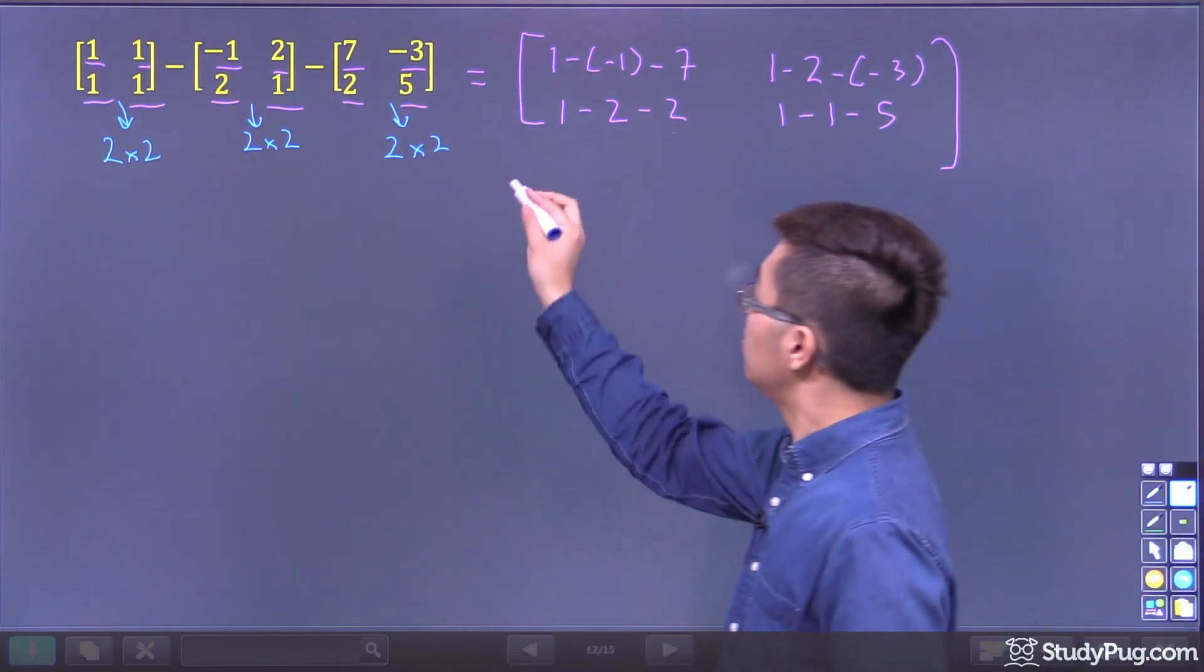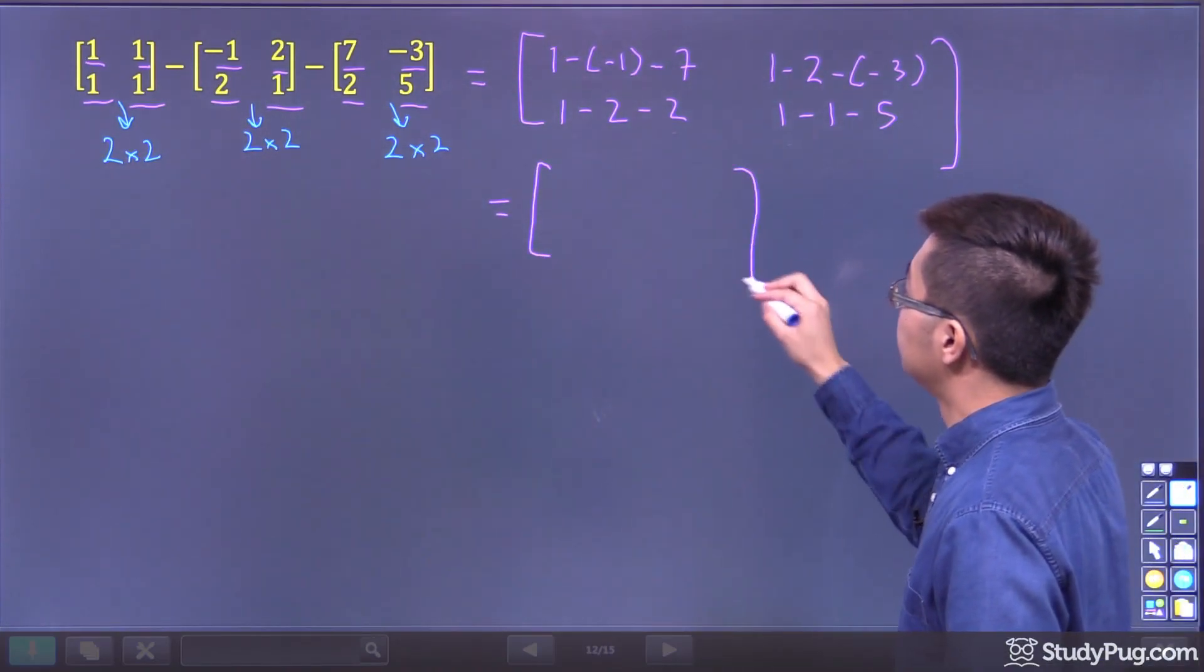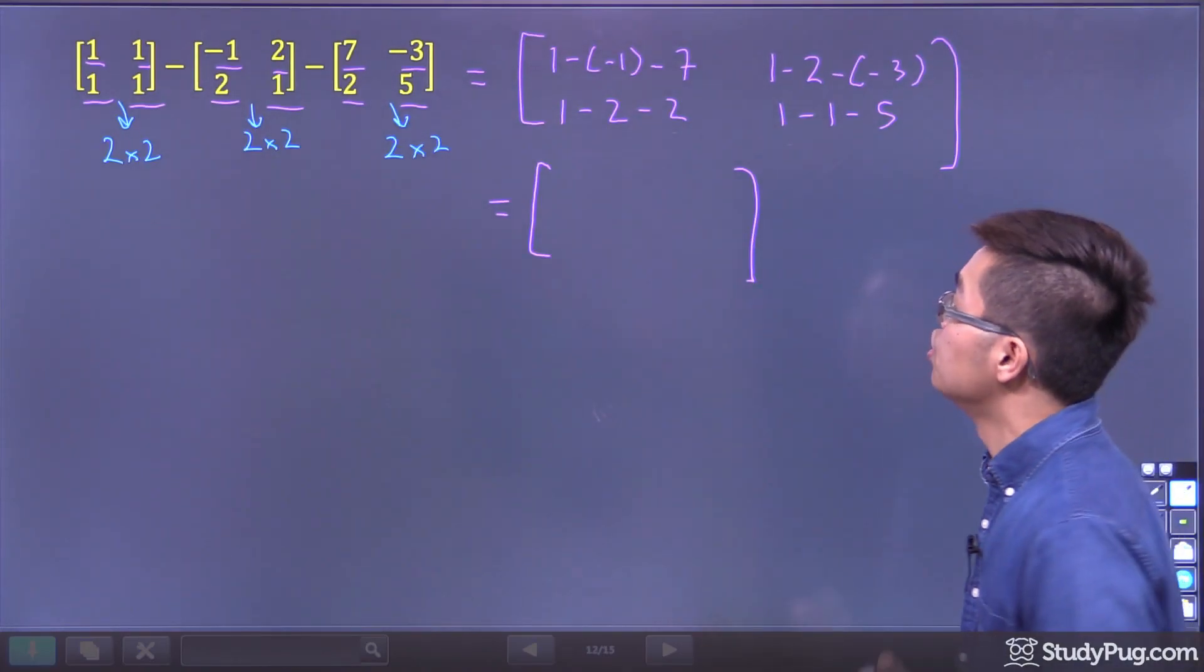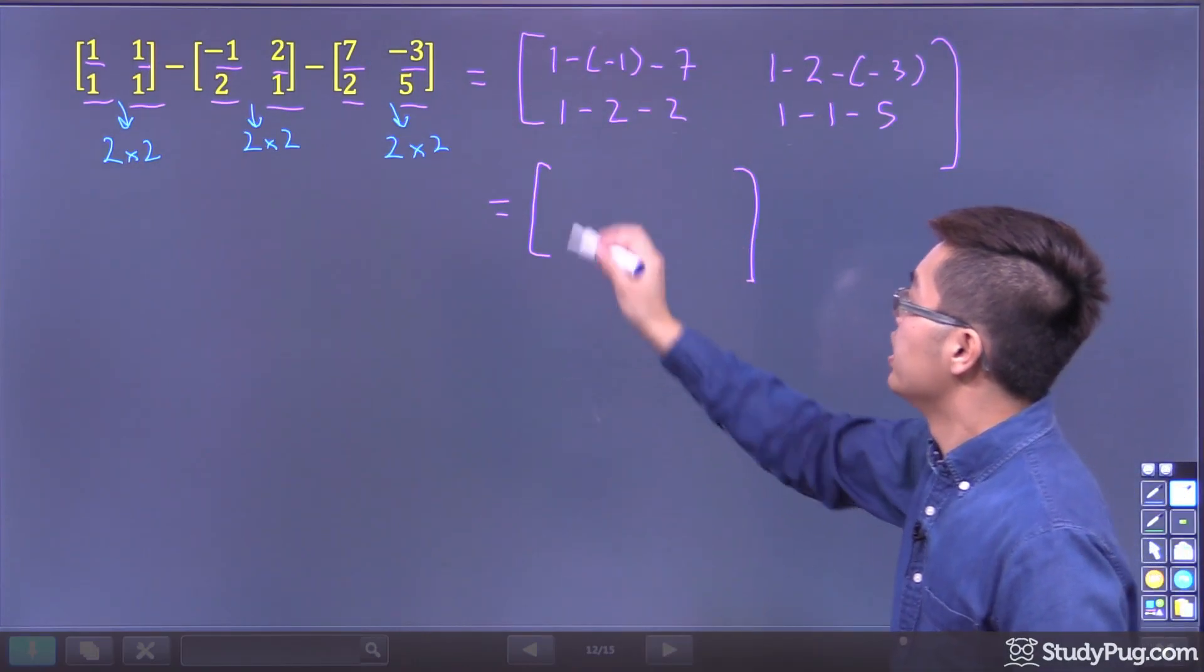Now we go ahead and calculate what this is. So 1 minus negative 1, that's 1 plus 1, which is 2. And so we got 2 minus 7, which is negative 5.